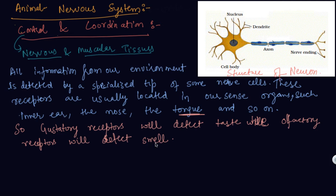Now we will study how this information is acquired or detected by our sensory organs or the nervous system. This information is acquired at the end of the dendritic tip of a nerve cell.